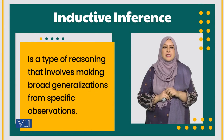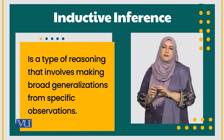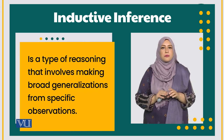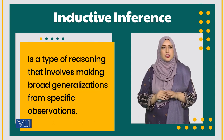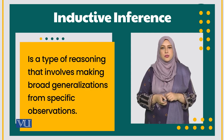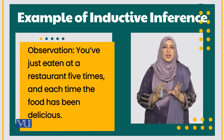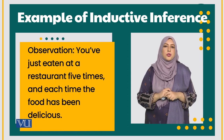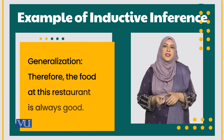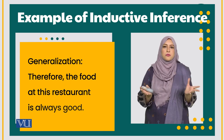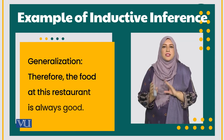The second type of inference is inductive inference, which is the exact opposite of deductive inference. Inductive inference is a type of reasoning that requires making a broad generalization on the basis of specific observations. For example, if you have eaten out at a specific restaurant five times and every time the quality of food is really good and delicious, then we can make a generalized observation that the food is really good every time in that particular restaurant.